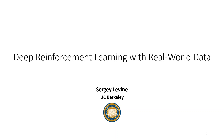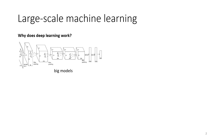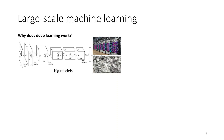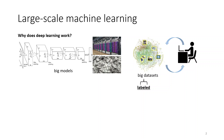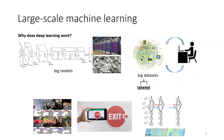My name is Sergei Levin and I'm going to talk about deep reinforcement learning with real world data. Let's start with a big question: what makes modern deep learning work? If we have a really big model and we train it on a really big server with lots of GPUs that we buy for lots of cash and we have lots of data, ideally labeled data, then we can get really good results on image recognition, machine translation, speech recognition, and many other applications. But in practice, oftentimes we're really bottlenecked by the availability of large, strongly labeled data sets.